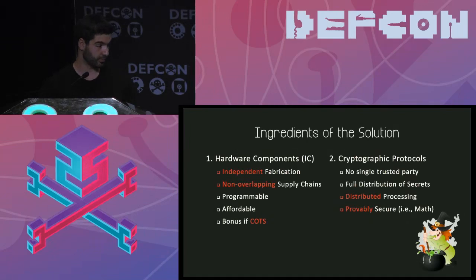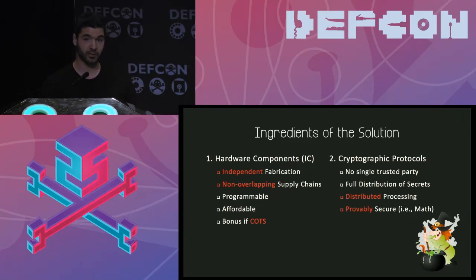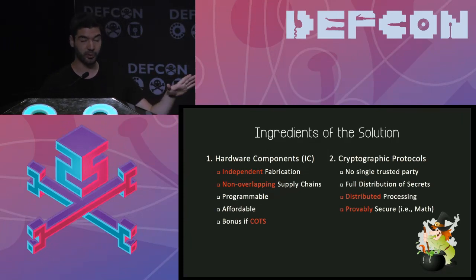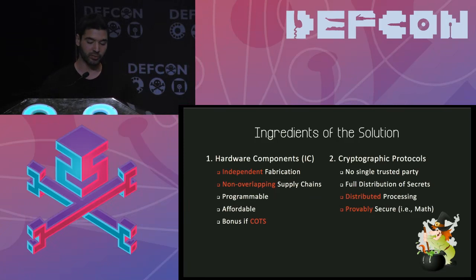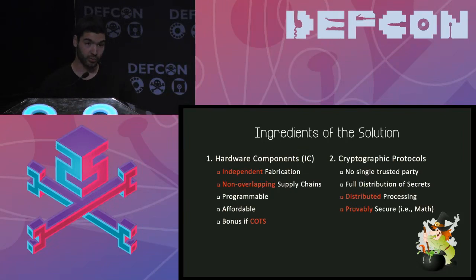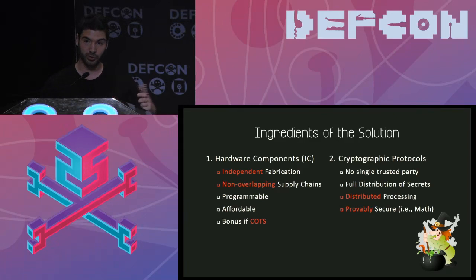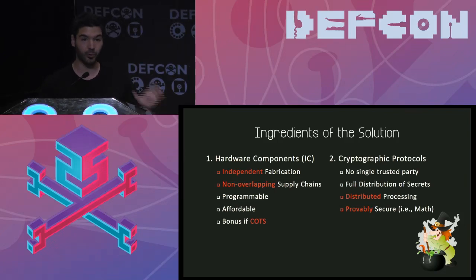Here are the ingredients of our solution: hardware components and cryptographic protocols. For ICs, we need independent fabrication — they must come from different facilities with non-overlapping supply chains — they must be programmable, affordable, and ideally commercial off-the-shelf. For cryptographic protocols, we want protocols where no party is trusted, secrets are completely distributed, and operations can be performed in a distributed manner with mathematical security proofs.